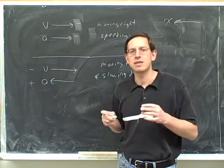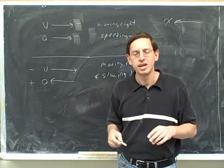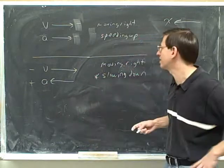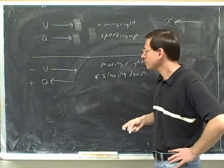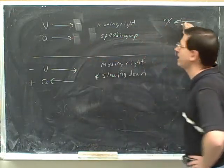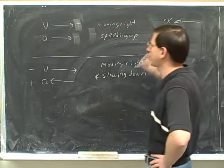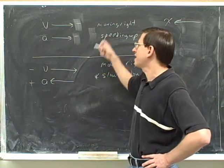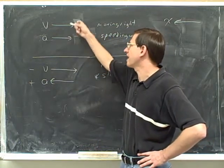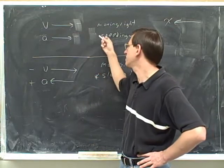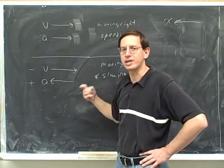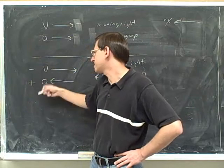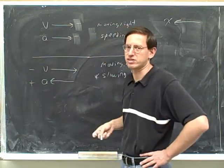If the acceleration has the same sign as the velocity, you're speeding up. If the acceleration has the opposite sign to the velocity, you're slowing down. In our example where we chose left as the positive direction and we're accelerating to the right, the acceleration is negative — but since we're speeding up, the acceleration and velocity must have the same sign. When you're slowing down, the velocity and acceleration will have opposite signs because they have to be anti-parallel.